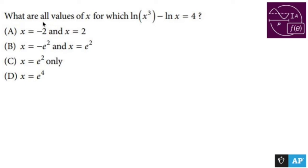What are all values of x for which ln(x³) - ln(x) = 4? Now when I see two ln's right next to each other, I remind myself that ln's follow the same exact rules as logs.